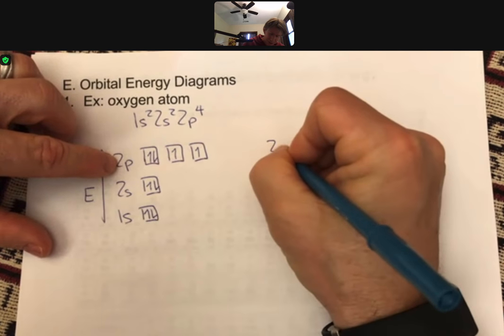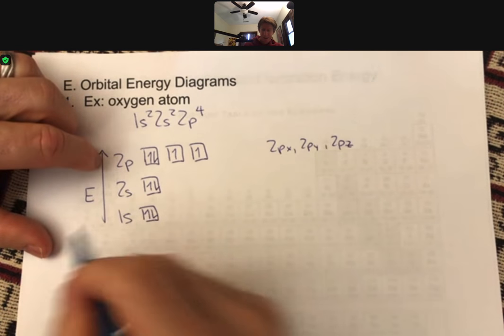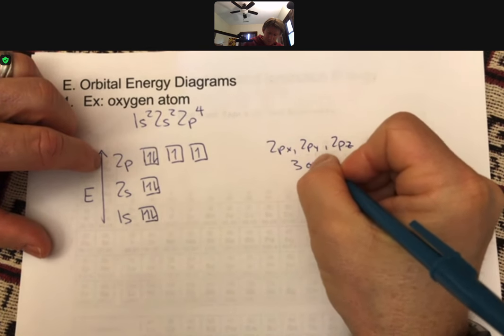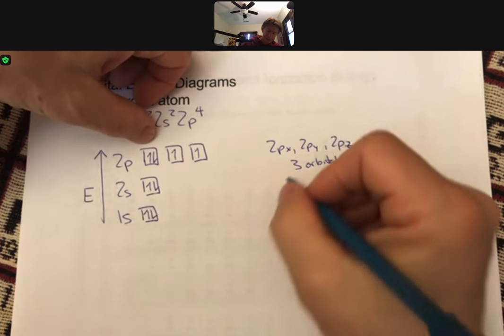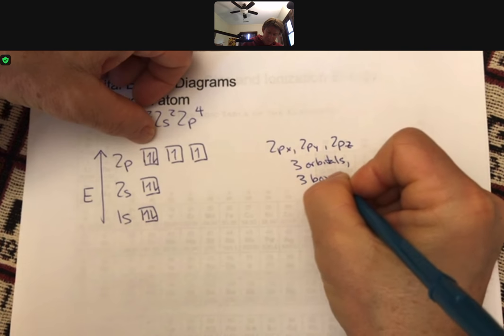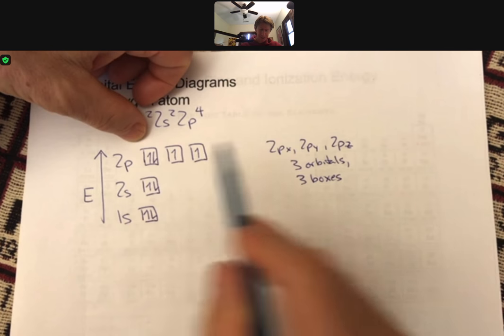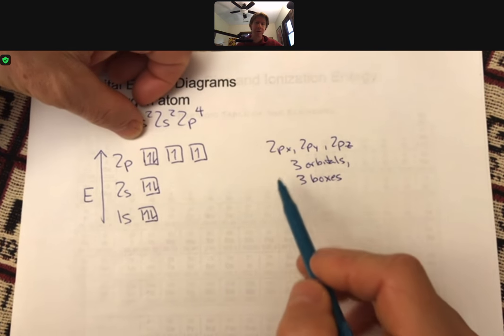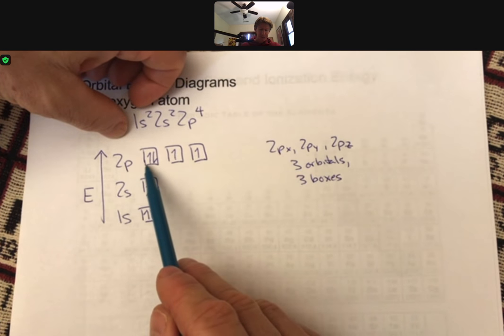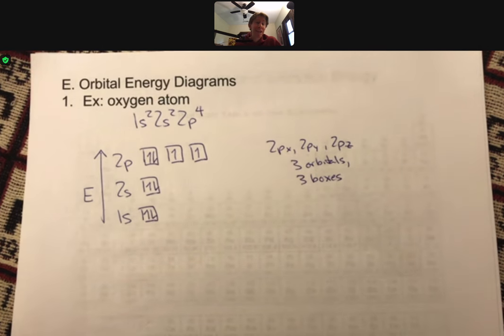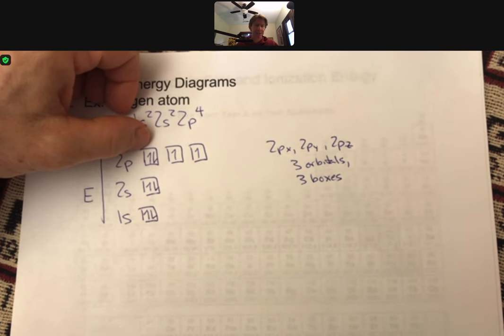And now might be a good time to talk about how, in 2p, there are 2px, 2py, and 2pz. There are three orbitals, which leads to there being three boxes. But, as a side note, we can't tell which of these boxes is which of these orbitals. We never will label them, per se, because the axes are arbitrary. We put the axes on, so there's no way to tell them apart. There's no differences there.